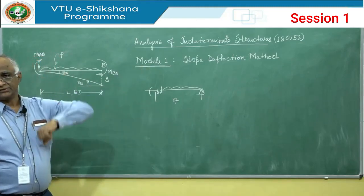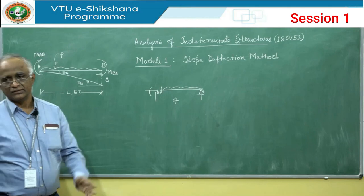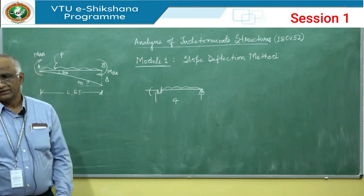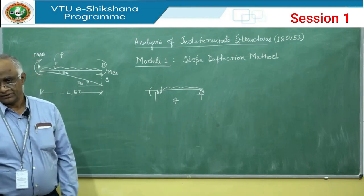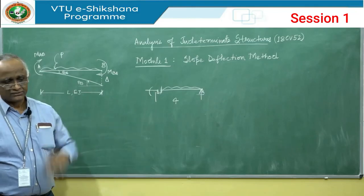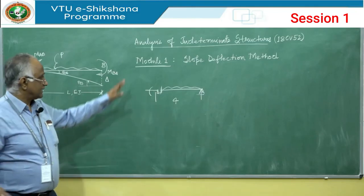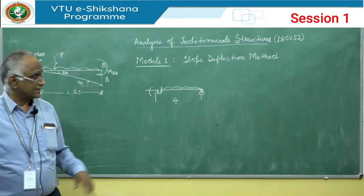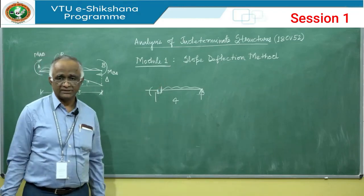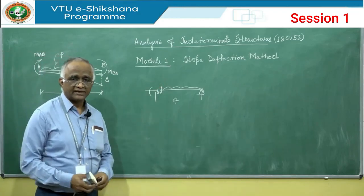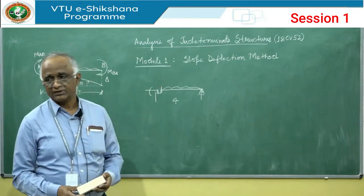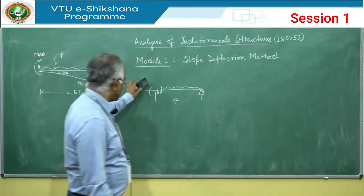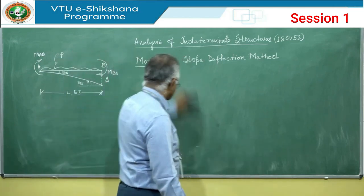To go into this method, we need to understand what the slope deflection method is. Basically, we derive an equation containing slope, deflection, and the required quantity — the bending moment at various points. Since the unknowns are displacements, this approach comes under the category of displacement methods. Let me now take up the derivation of the equation.